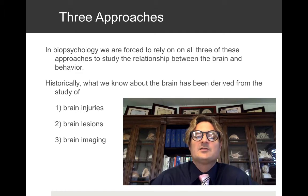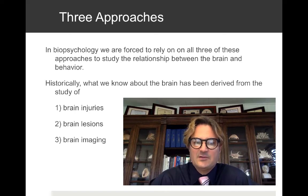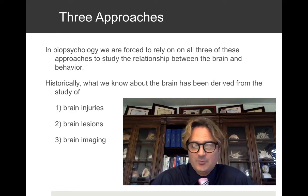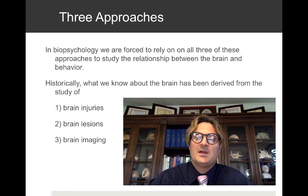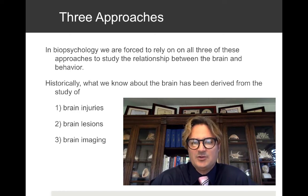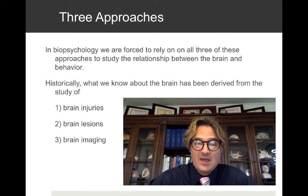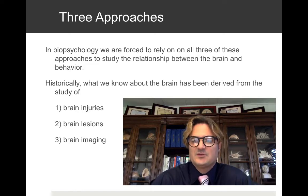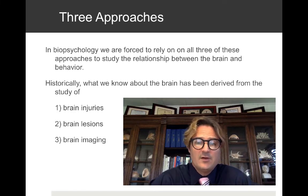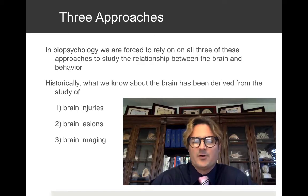In biological psychology, we're forced to rely on all three approaches to study the relationship between brain and behavior. Historically, what we know about the brain has been derived from three major areas: brain injuries — such as Phineas Gage, a railroad foreman — brain lesions, where we lesion animals to recreate syndromes of interest, and brain imaging, which is a newer method with limited availability 100 years ago.